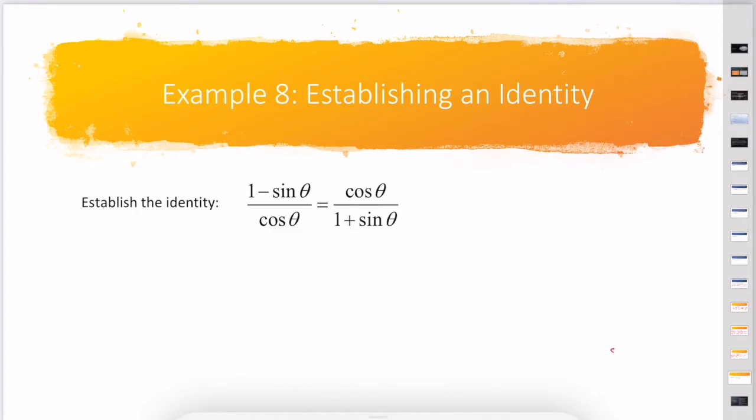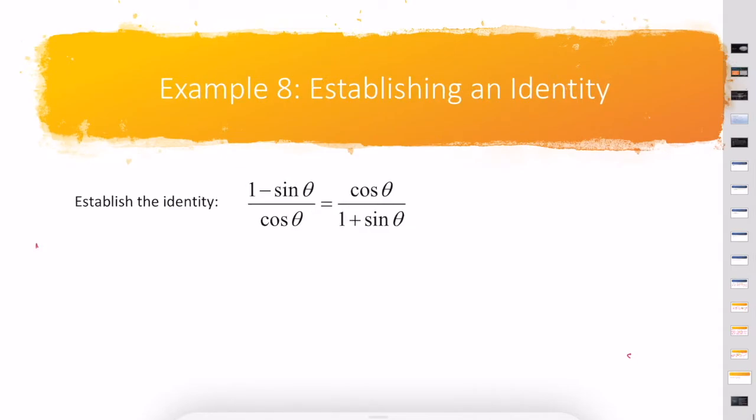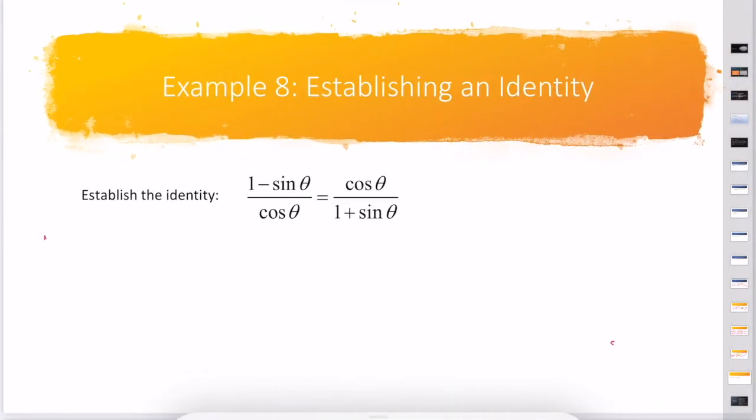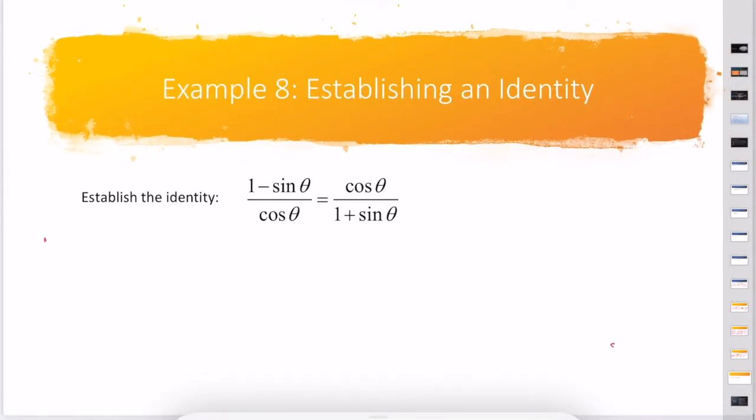Lastly, we have Example 8. I need to show that 1 minus sin θ over cos θ equals cos θ over 1 plus sin θ.